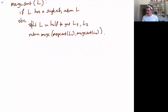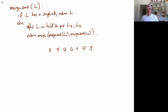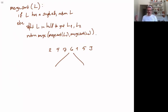Let's look at a graphical example. Say we have the list: 2, 4, 7, 6, 1, 5, 3. We run merge sort: if it has a single element it does not, so we skip that step. Otherwise we split it in half and recurse. Since we have an odd number of elements, we put the extra in the first half: we get 2, 4, 7, 6 on one side and 1, 5, 3 on the other.